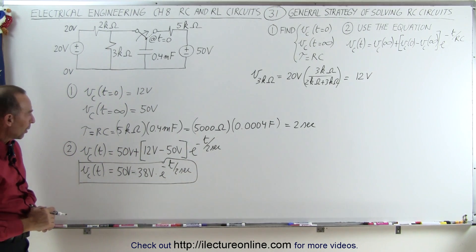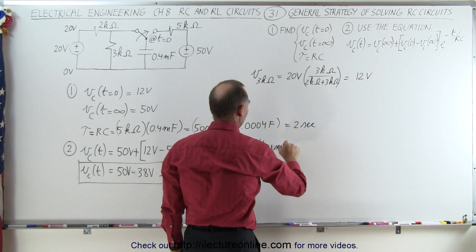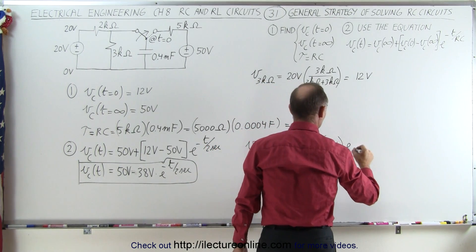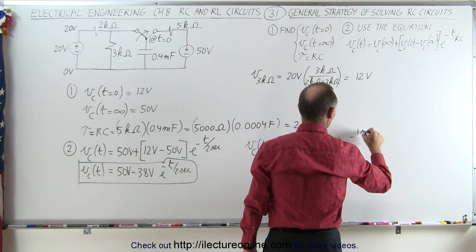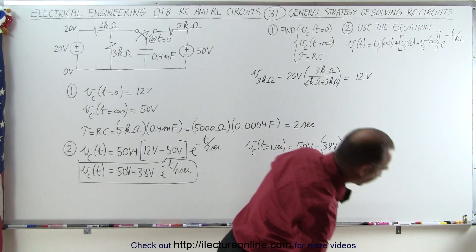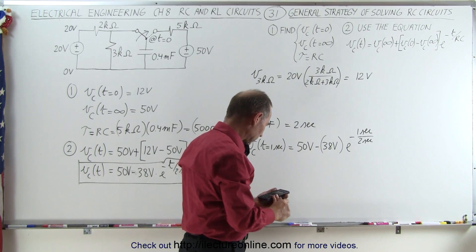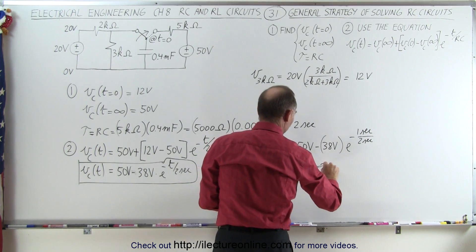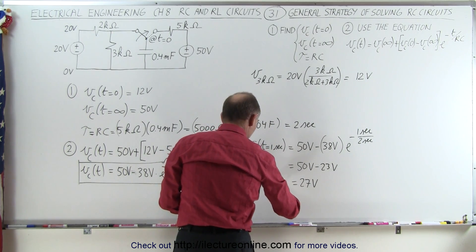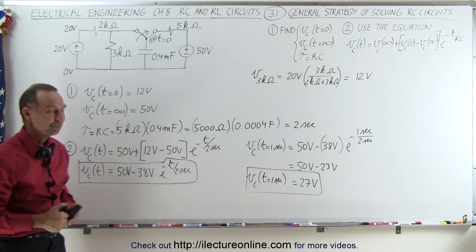Let's find the voltage across the capacitor after one second. V_C at t equals one second equals 50 volts minus 38 volts times e to the minus one over two, which is e to the minus one-half. Calculating: e to the negative 0.5 times 38 gives approximately 23 volts. So 50 volts minus 23 volts equals 27 volts. As an example, the voltage across the capacitor at t equals one second is 27 volts — that's how to use the equation.